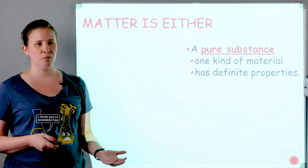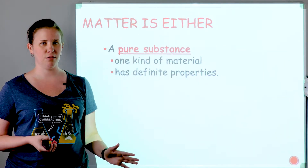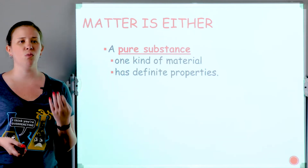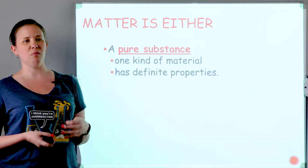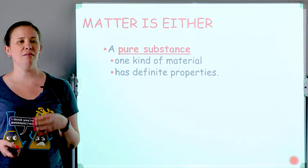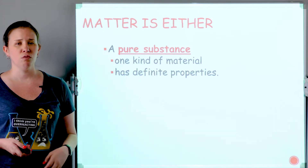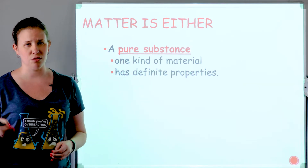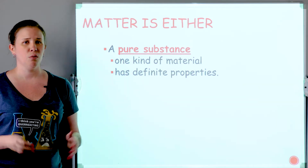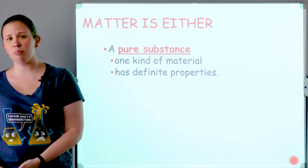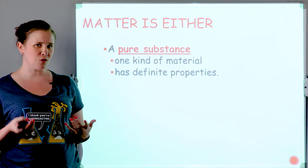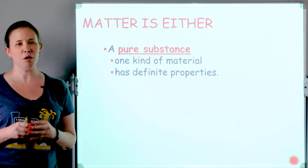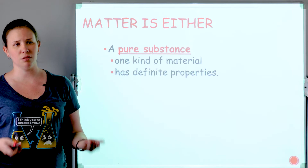Starting with the two main categories — pure substance versus mixture. A pure substance would have to have one unique type of material throughout and have its own properties. For example, hydrogen has certain properties and oxygen has certain properties, whereas water would have different properties. Those are examples of elements versus compounds, and you can see how those definitive properties are unique to each pure substance.